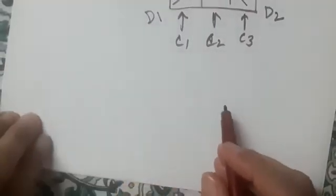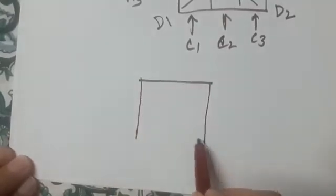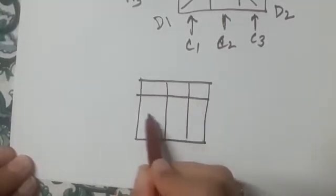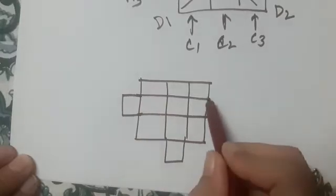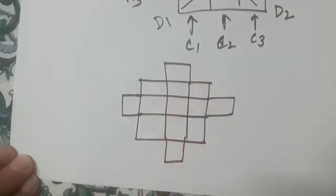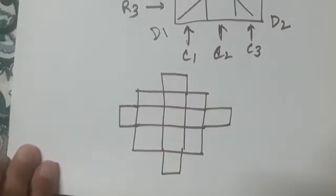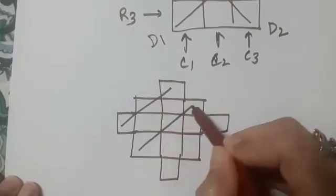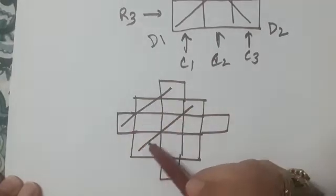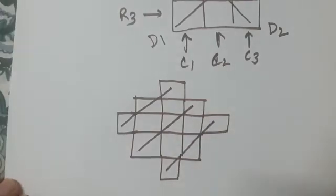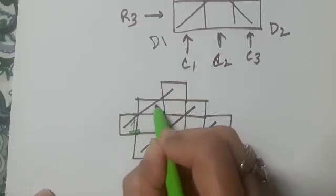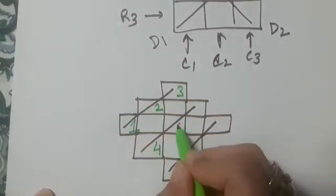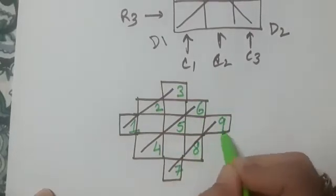Let me show you the method. The first step is to make a three by three grid, and then we extend the middle boxes — you can see how we extend them. Now observe carefully: here you will see three diagonals — this is one, this is two, and this is three. In these three diagonals we are going to put the numbers in this fashion: one, two, three, four, five, six, seven, eight, nine.